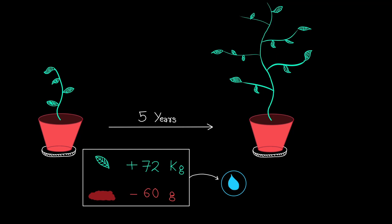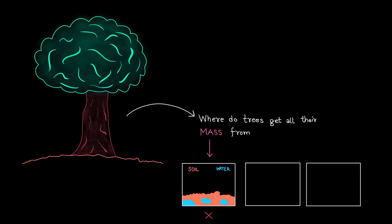So Jean-Baptiste concluded that the mass must come from the water. While he was on the right track, this is actually not the correct answer. The mass doesn't come from the water because the water that enters the tree leaves through the leaves through a process of evaporation.